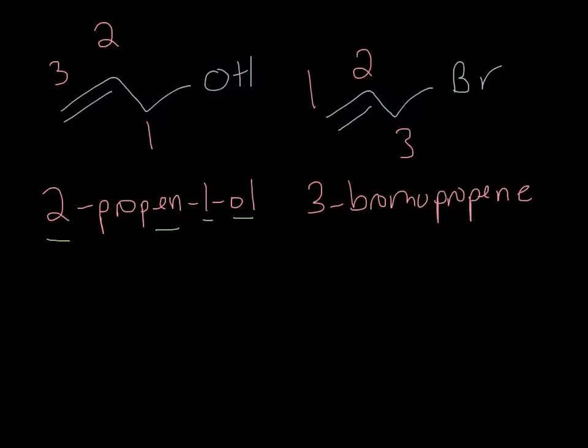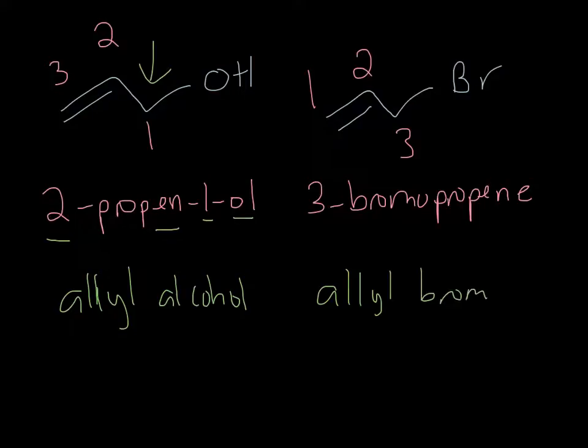These are also referred to by their common names. The common name for this first compound is allyl alcohol, which tells us there's an alcohol at the allylic position, next door to the double bond. This other compound is called allyl bromide, indicating a bromine at the allylic position. These are common names for simple molecules involving the allylic system. You will sometimes see these, so I want you to be comfortable and familiar with what an allyl alcohol or allyl bromide is.